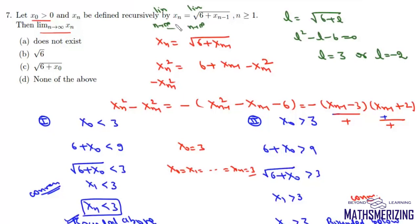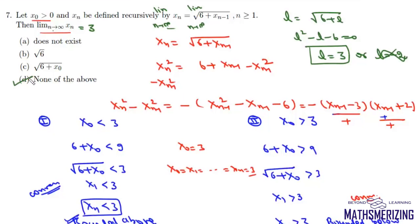Since the sequence contains only positive terms, its limit cannot be negative. So the limit of this sequence is three. Therefore, the limit as n tends to infinity of xn equals three, which is option D — none of the above.